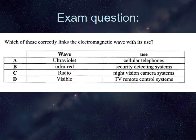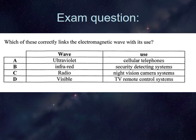Which of these correctly links the electromagnetic wave with its use? UV for cellular phones — no, UV has nothing to do with communication. Radio for night vision cameras — no, that's not right either. Visible light for TV remote control systems — no. The answer is B: infrared for security detecting systems.